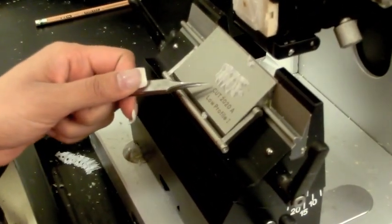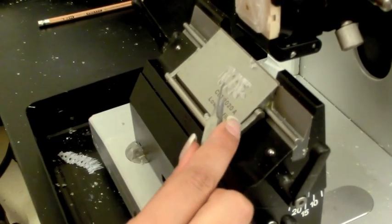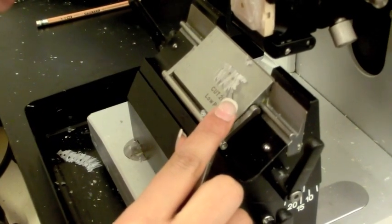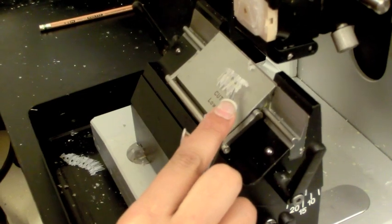Use tweezers to lift the ribbon from the microtome. Place it on the bubble of water on your labeled slide. Repeat making ribbons and making slides until a desired amount is reached.